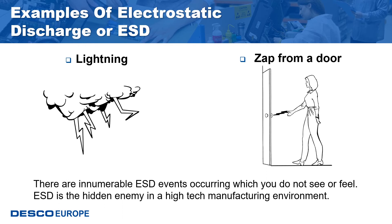It takes a discharge greater than 2,000 volts for a person to feel it. ESD is the hidden enemy in a high-tech manufacturing environment — just because you cannot see or feel an ESD event does not mean ESD events are not occurring. Human beings are insensitive unless the ESD is somewhat above 2,000 volts, yet many electronic components can be damaged by much smaller discharges. ESD control is necessary to prevent innumerable little lightning bolts — ESD events — from occurring.